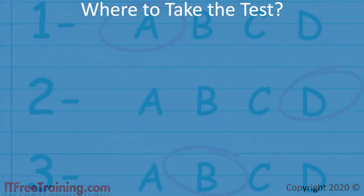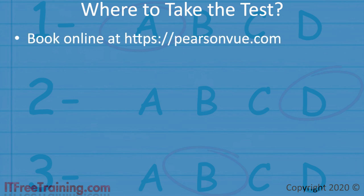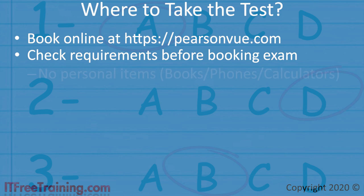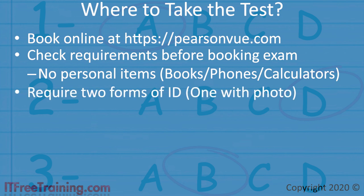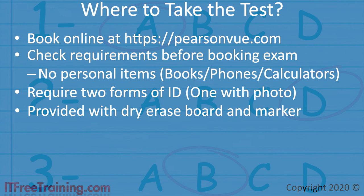When you are ready to take the test, go to the Pearson VUE website and book the exam. Pearson VUE has test centers in over 120 countries. Before booking, check the exam requirements: no personal items like books, phones, or calculators, and no bags in the exam room. You will need two forms of ID, one of which must be a photo ID. You won't be able to take a pen or paper, but you will be given a dry erase board and non-permanent marker. Arrive at least 15 minutes early — if you arrive early, they will often let you start early.